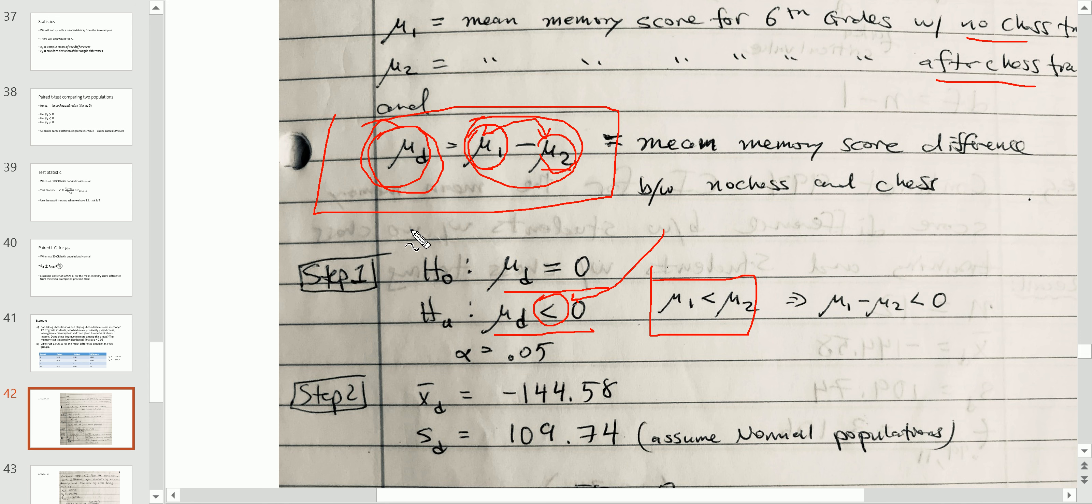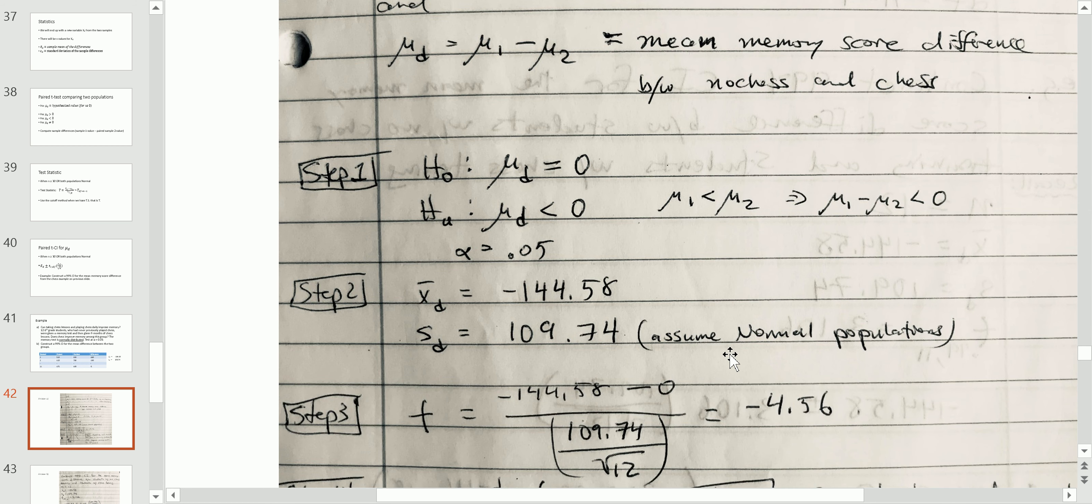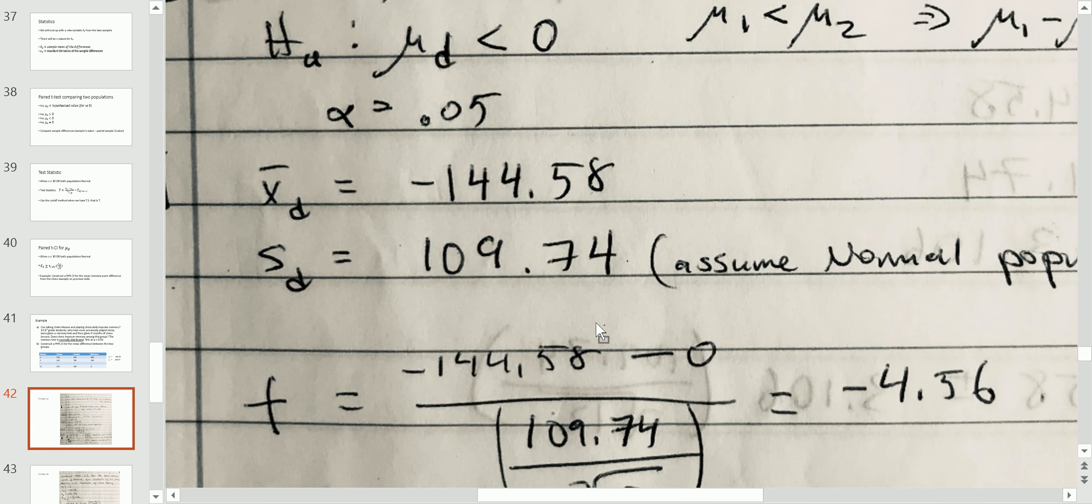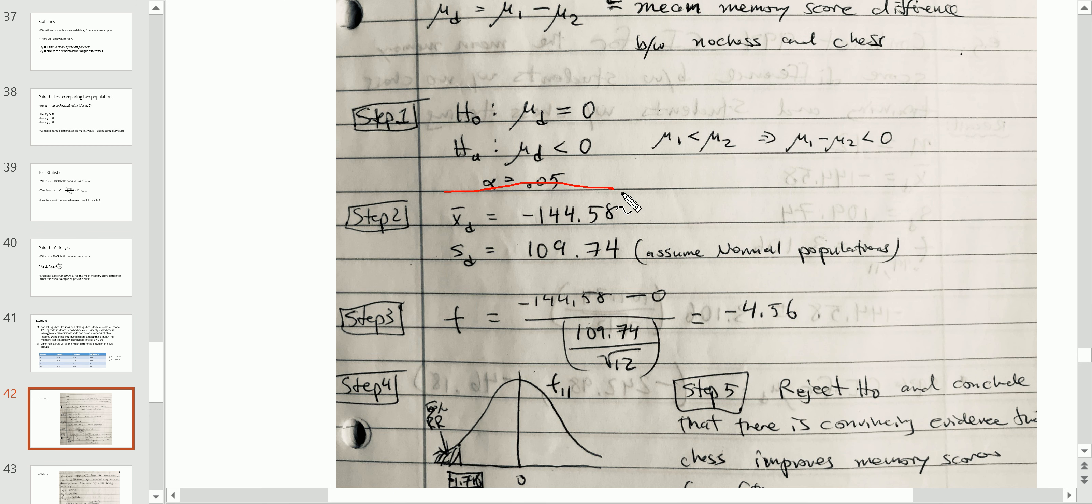Now, having the statements written out alpha point 0.05, we check that we have the large sample condition satisfied. We do, n is less than 30, but we have a normal population so we can go forward. We compute the test statistic using the summary statistics given to us by the problem along with the assumption of normality. Very important. We compute the test statistic negative 4.56. We know this was a one tail test and specifically that it was a left tail test because of the alternative.